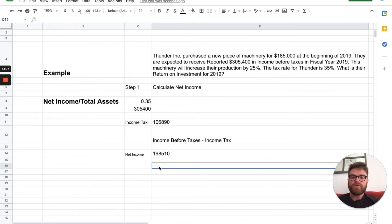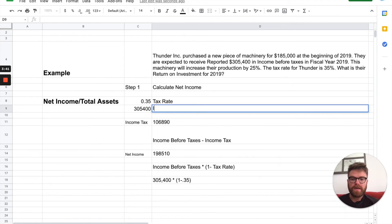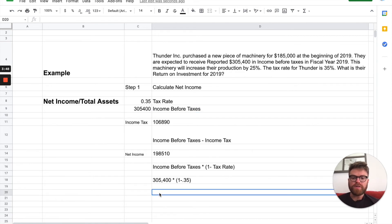Now, there's another way to do it. You can also find your net income by taking income before taxes, multiply times 1 minus the tax rate. So, what is that? Well, you take $305,400 times 1 minus 0.35. That's your tax rate, remember? 0.35 is your tax rate. And this is your income before taxes. So, let's go ahead and multiply that out. $305,400 times 1 minus 0.35.